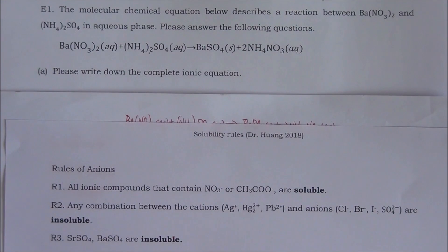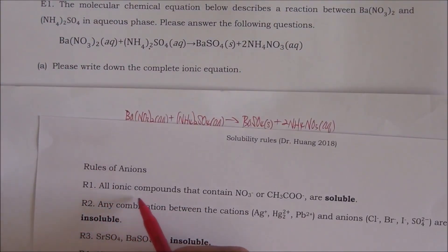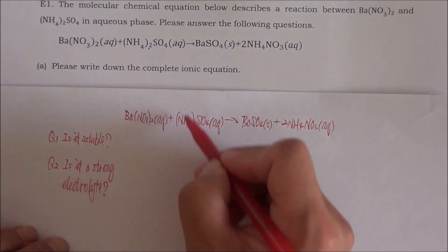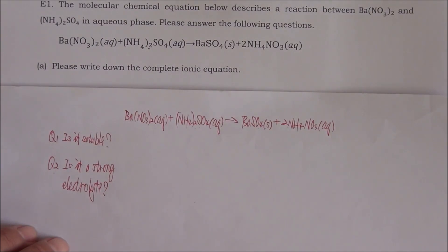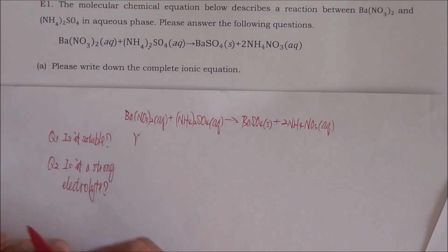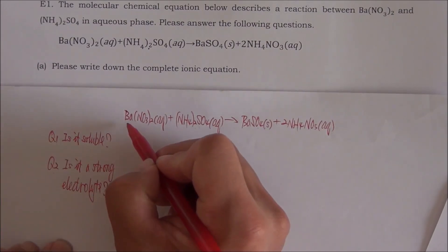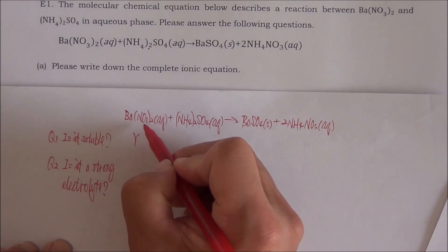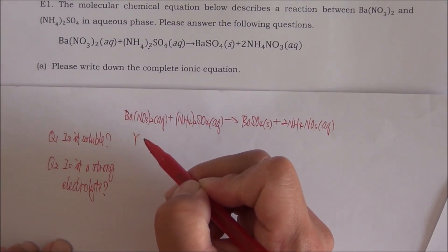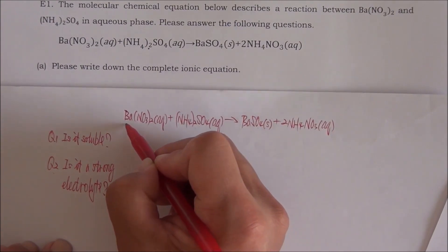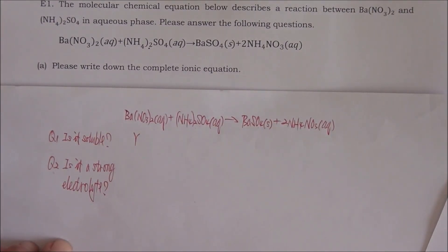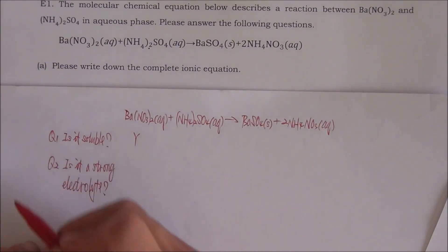Rule number one: all ionic compounds that contain nitrate or acetate are soluble. The first compound is barium nitrate — it does contain nitrate. Therefore, according to rule number one, it is soluble. The answer to question number one is yes. Now question number two: is it a strong electrolyte? Barium is a metal; nitrogen and oxygen are nonmetals. A compound formed from a metal and nonmetals is an ionic compound, and all ionic compounds are strong electrolytes. Therefore, the answer to question number two is yes.